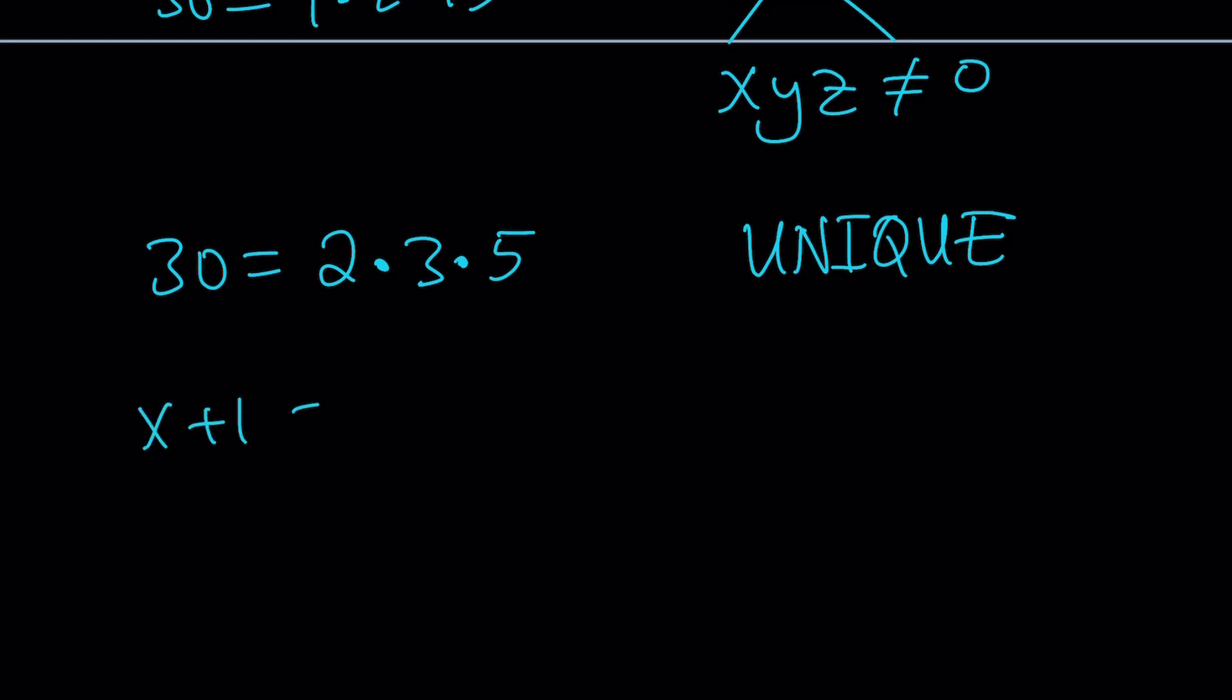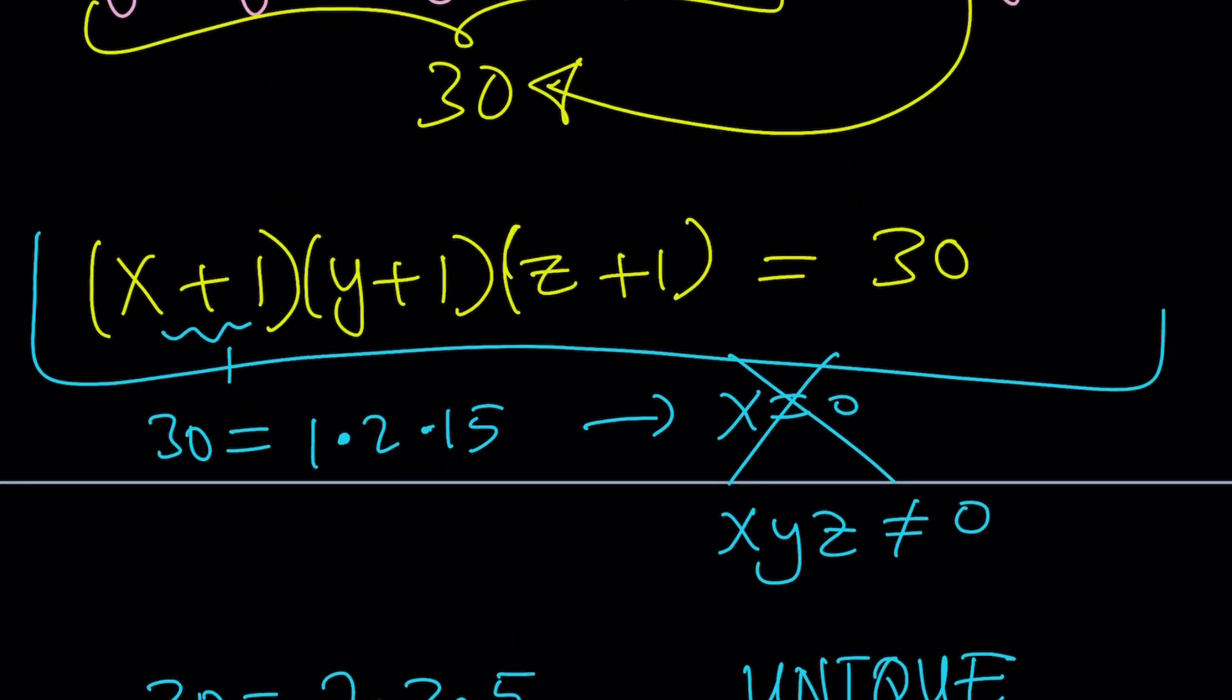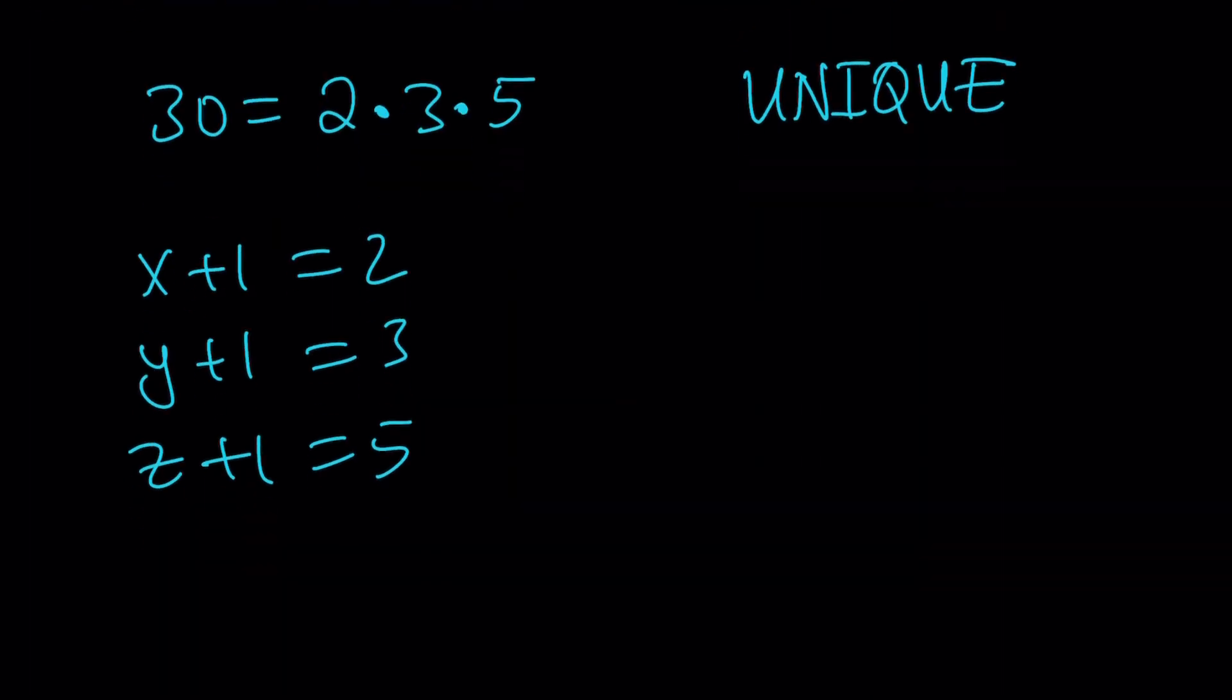So, obviously, we're going to consider the permutations. But let's just find one of the solutions. So, x + 1 can be 2. Y + 1 can be 3. And z + 1 can be 5. Remember, those were the factors that went into this product.